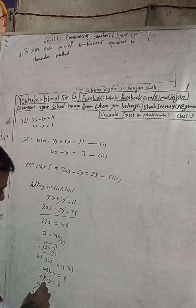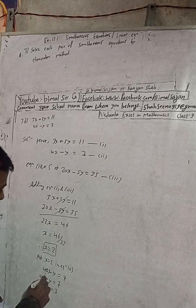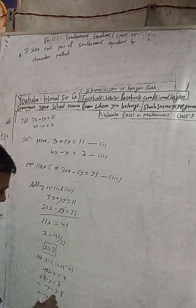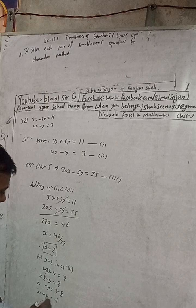This implies 8 minus y is equal to 7. This is minus 8. So this implies minus y is equal to minus 1. Therefore y is equal to plus 1.